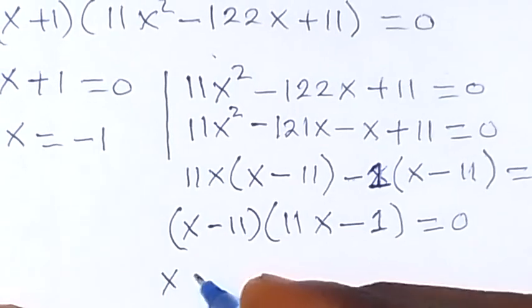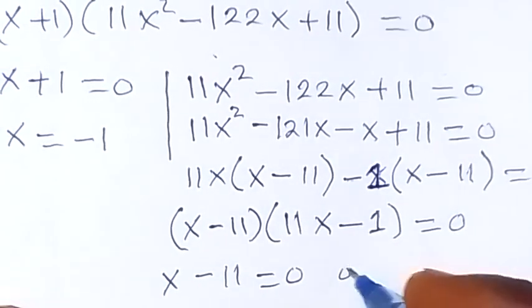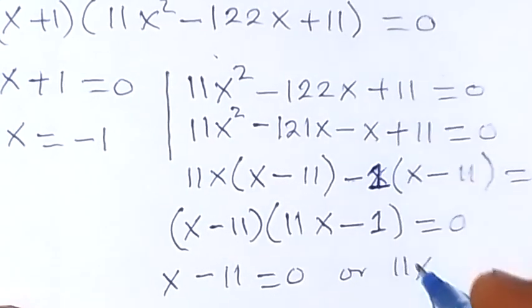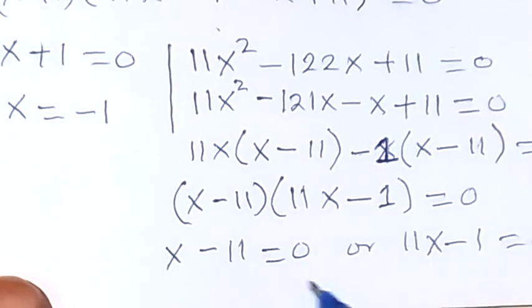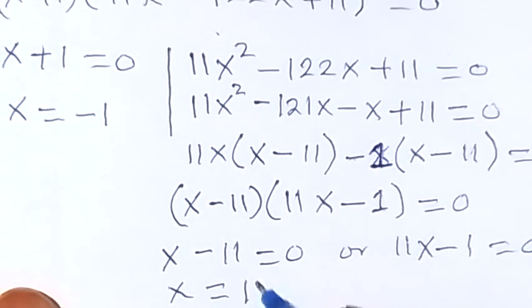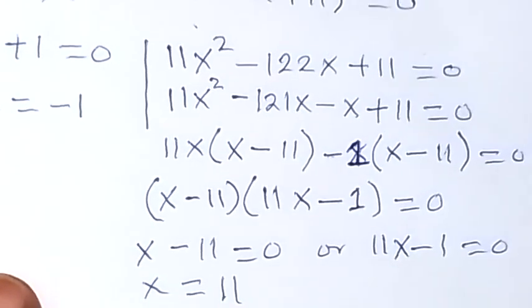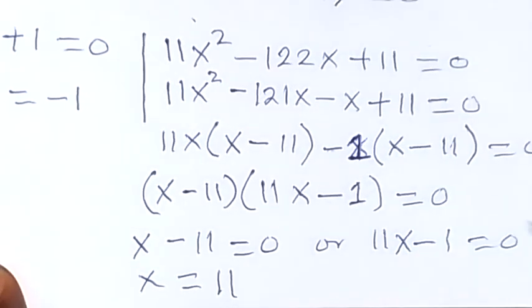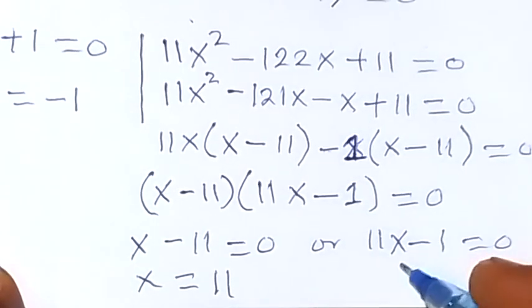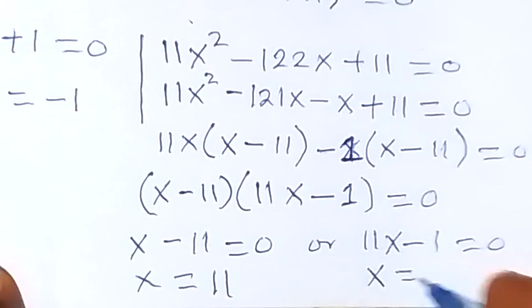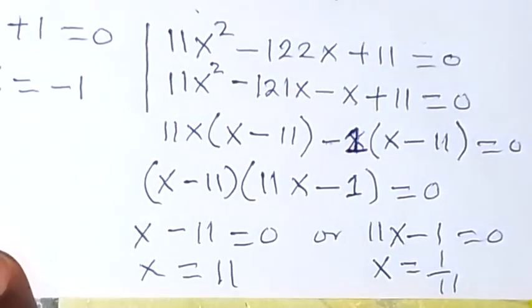From x − 11 = 0, we get x = 11. From 11x − 1 = 0, taking minus 1 to the other side and dividing both sides by 11, we get x = 1 over 11.